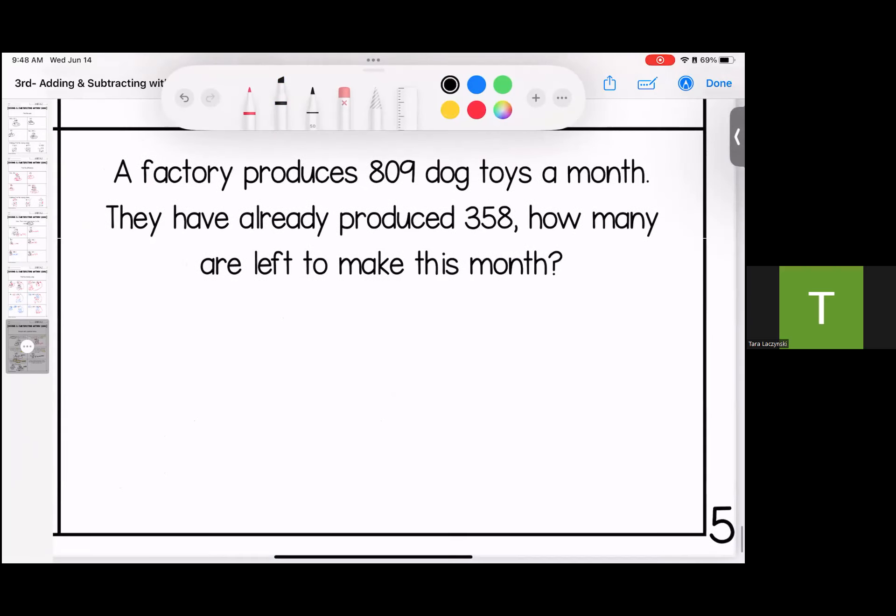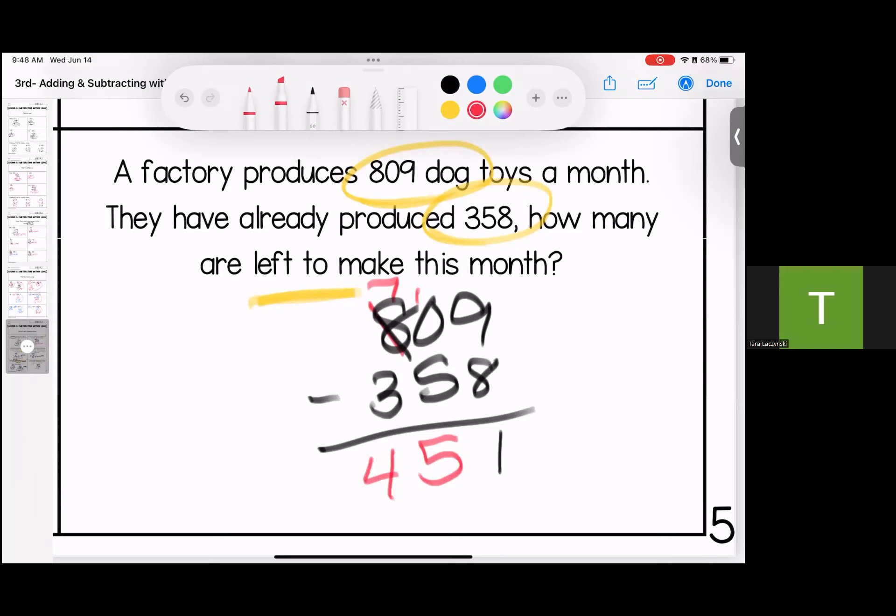Last one. A factory produces 809 dog toys a month. They already produced 359. How many do they have left to make this month? Well, if their goal for the month is 809 and they've made 358, I'm going to subtract. I need to borrow. 10 minus 5 is 5, 7 minus 3 is 4. They need to make 451 more.